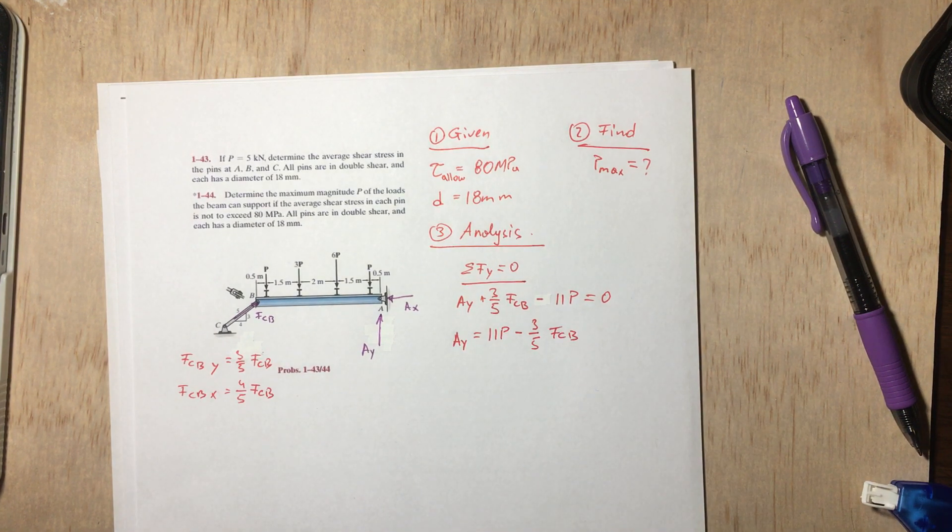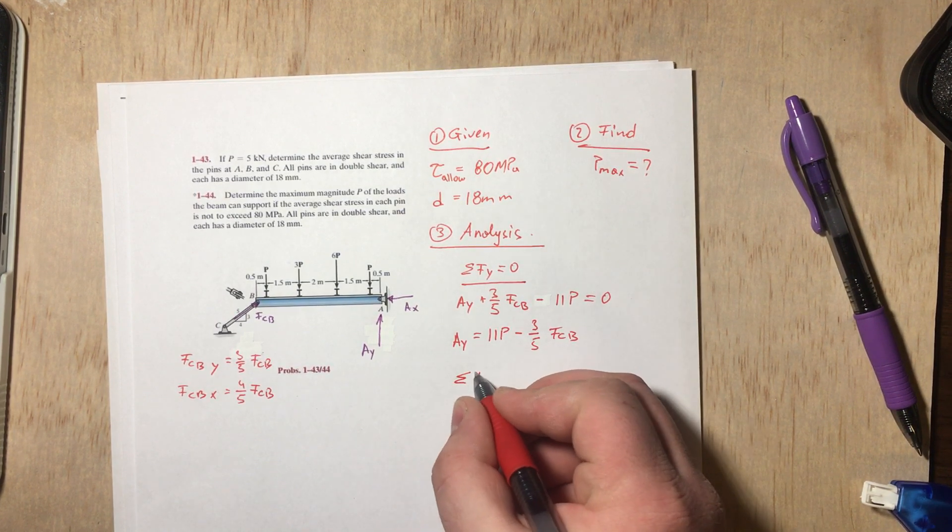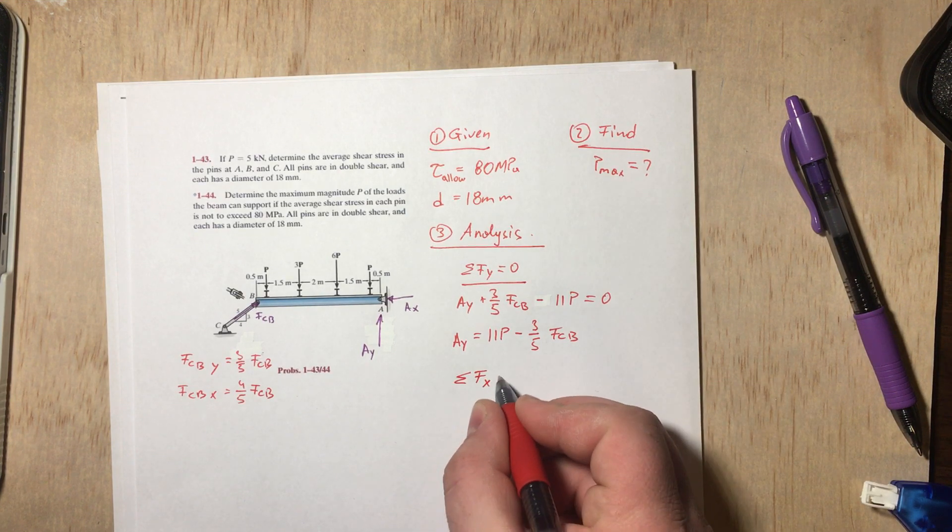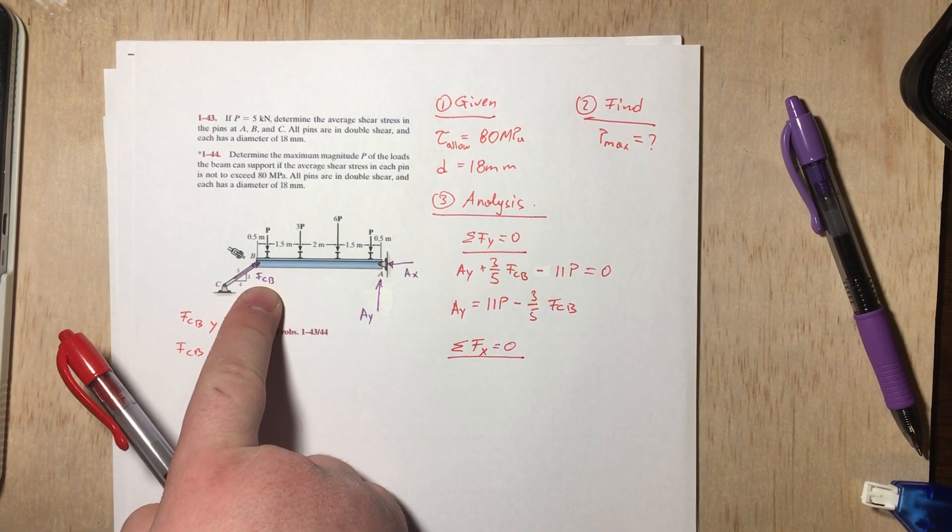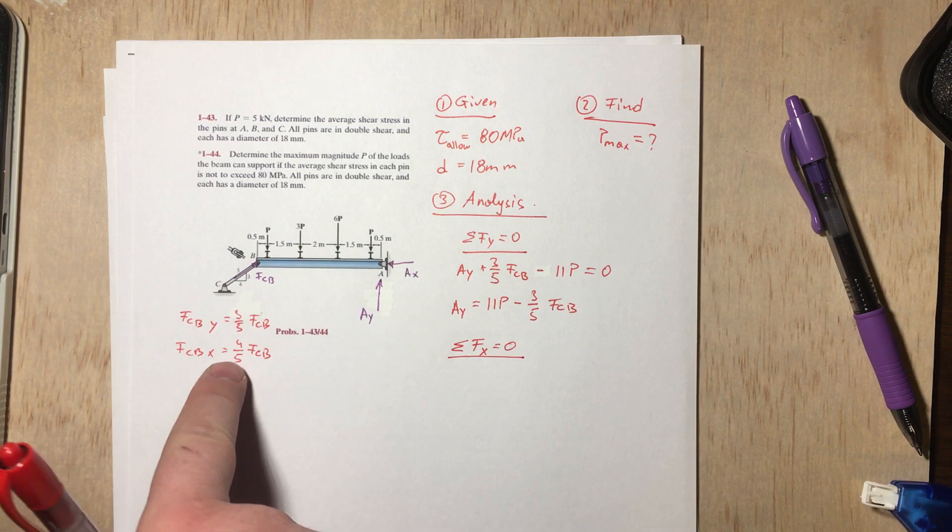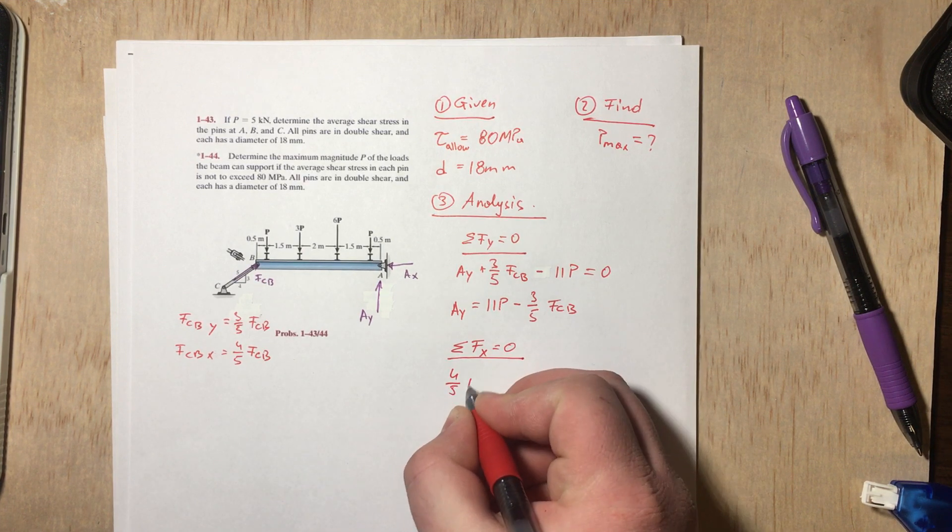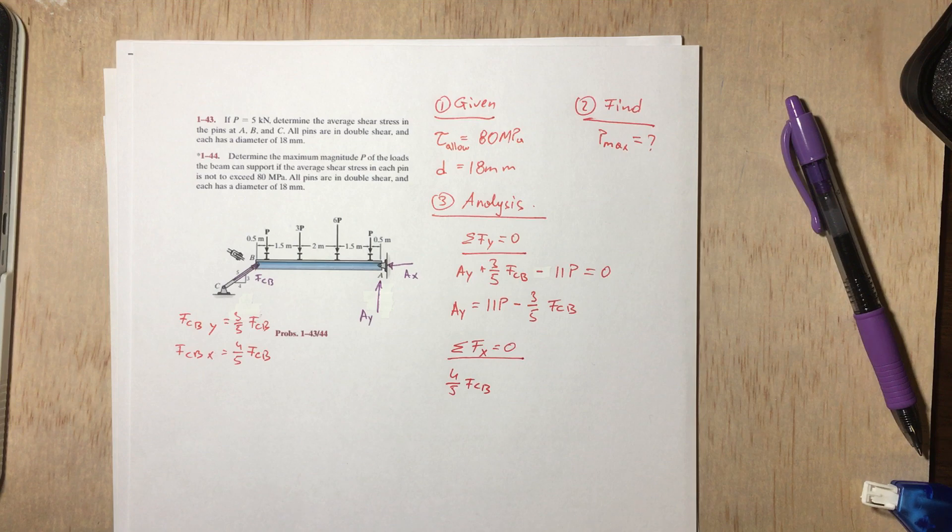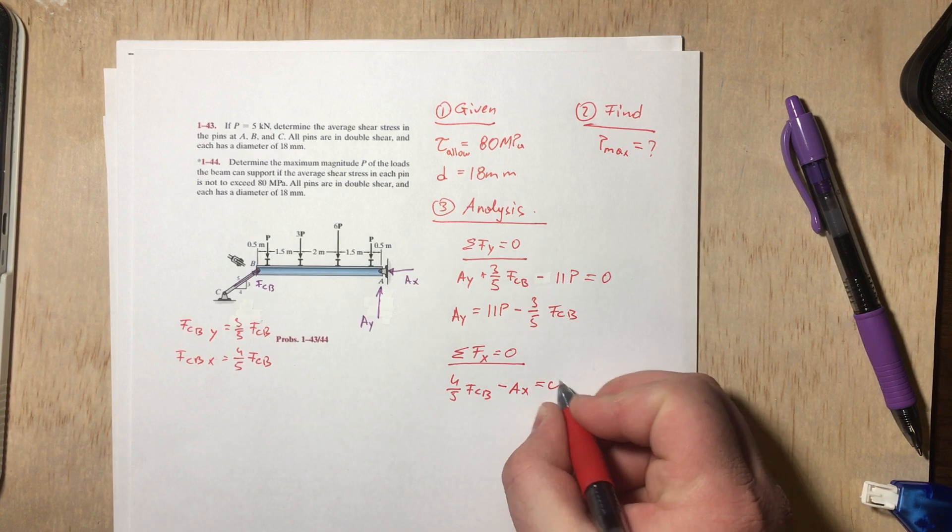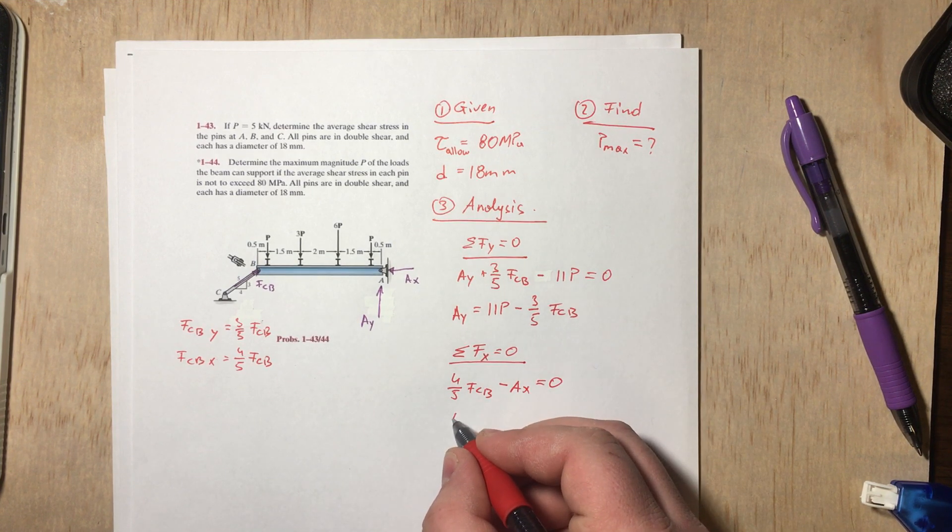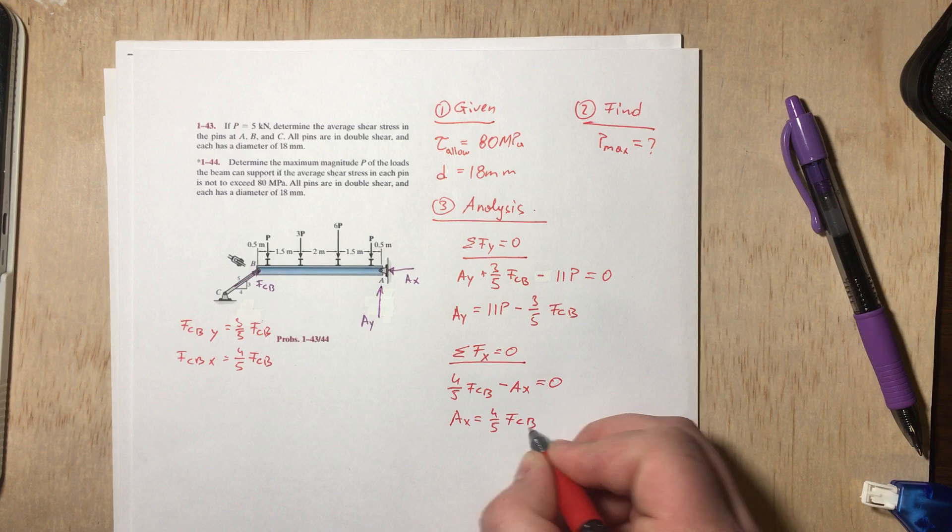Now let's do the sum of the forces in the x direction. That has to obviously equal 0. On the x direction we have our Fcb going to the right, so it's 4/5 Fcb, and we're going to have Ax on the other way. Those are the only two forces, so they have to add up to 0, which means Ax equals 4/5 Fcb.